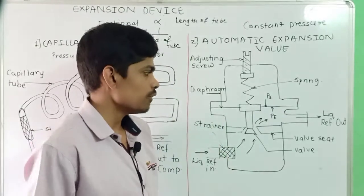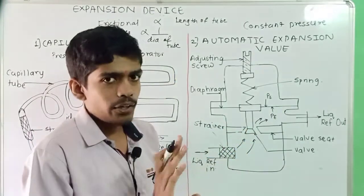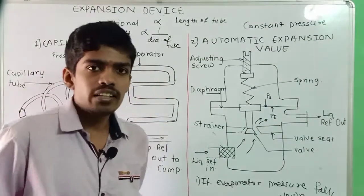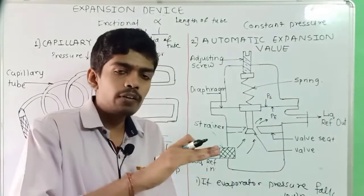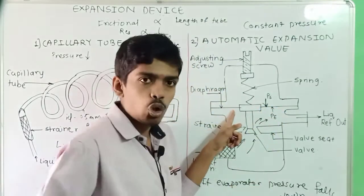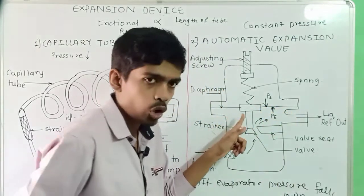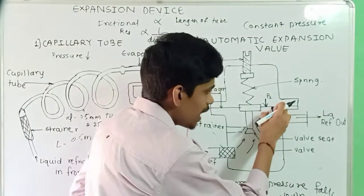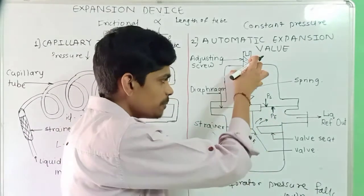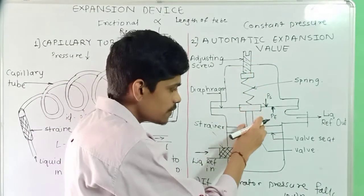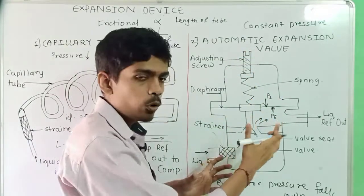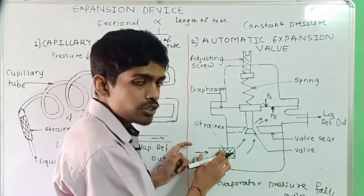While seeing the operation of the Automatic Expansion Valve — as mentioned, the opening and closing depend upon the pressure on the evaporator. Condition one: if the evaporator pressure falls down, the spring pressure is acting from the top and evaporator pressure is acting from the bottom on the diaphragm. If evaporator pressure is less than the spring pressure, the spring will expand, this will come down, and the valve will open, allowing more liquid refrigerant to enter the expansion device.